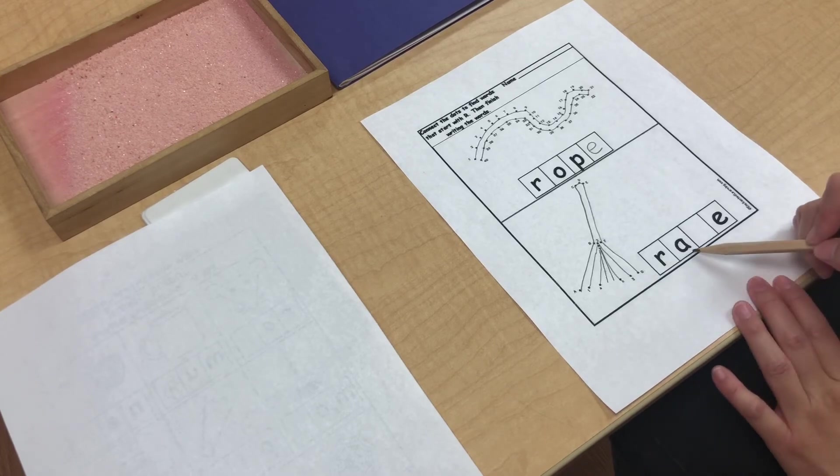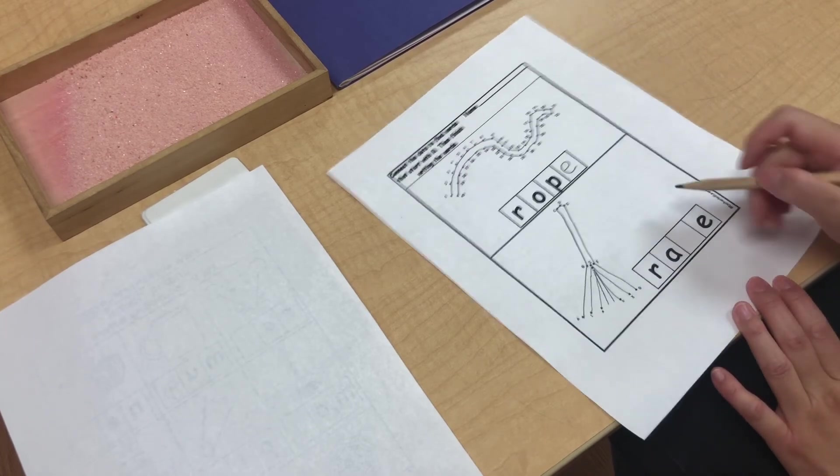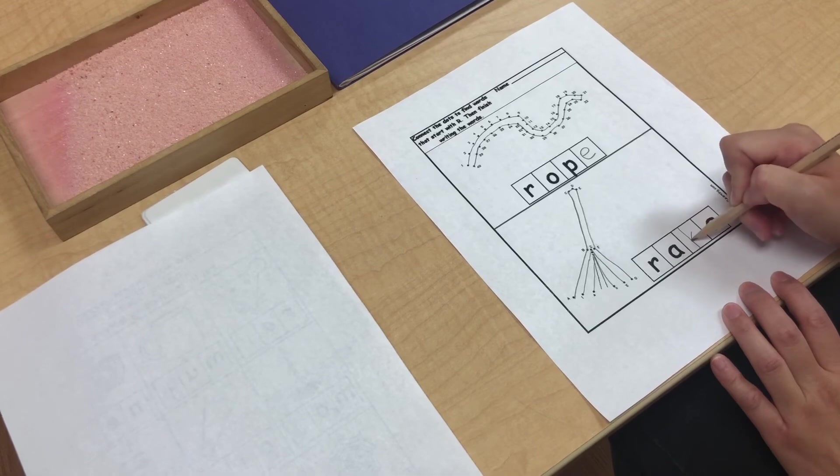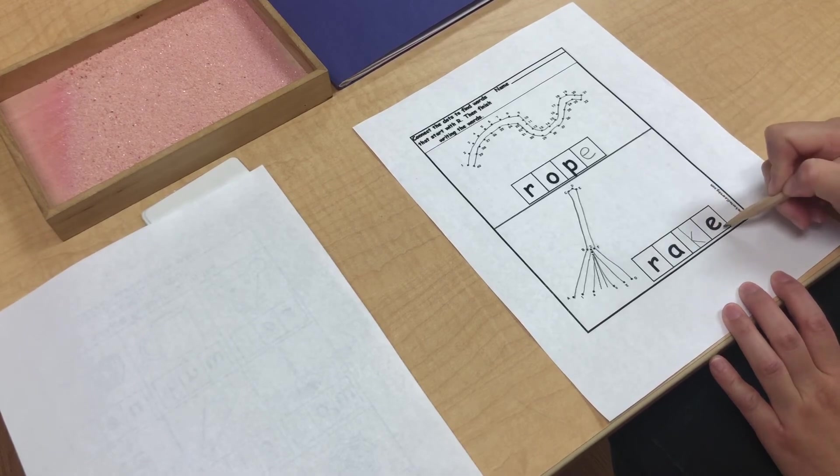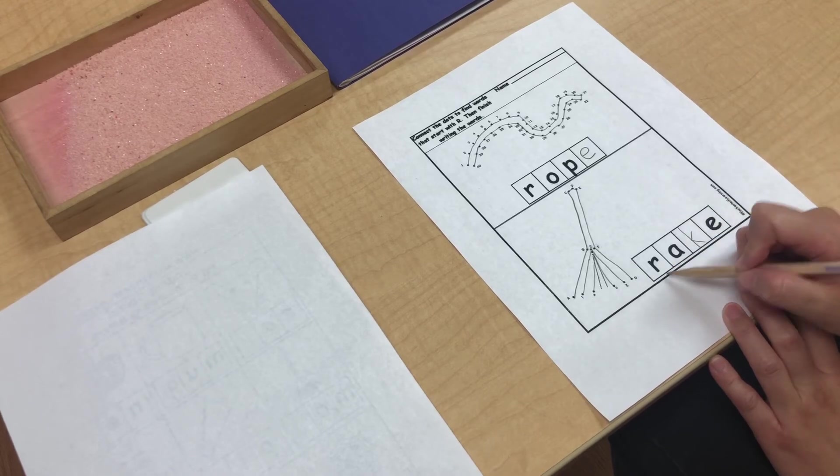R, A, K. Letter K is missing. And again, letter E is silent. Doesn't make sound. R, A, K. Rake.